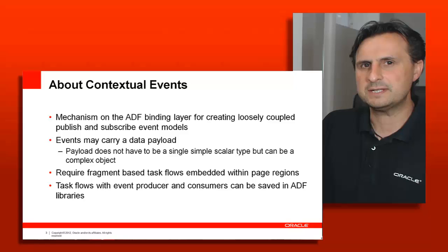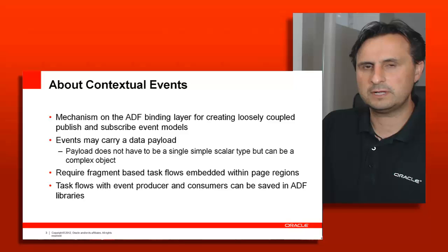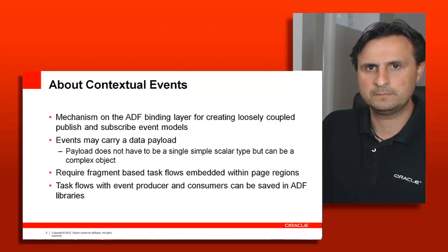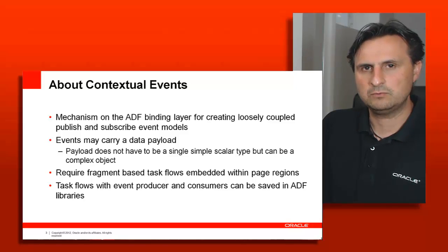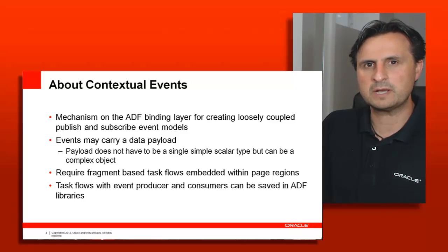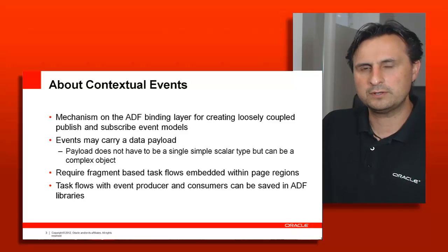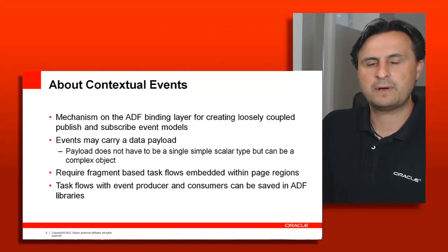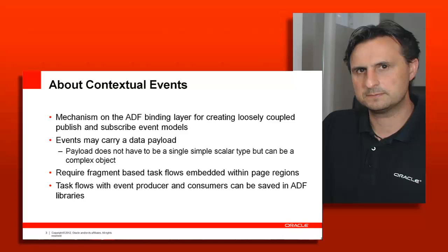With the events we send a payload, which could be a complex object or just a scalar value like a string or an integer. The publication of a contextual event is like a tree, where something creeps up the tree and then visits all of the branches. So there's no one-to-one direct messaging — it's a public broadcast of an event.